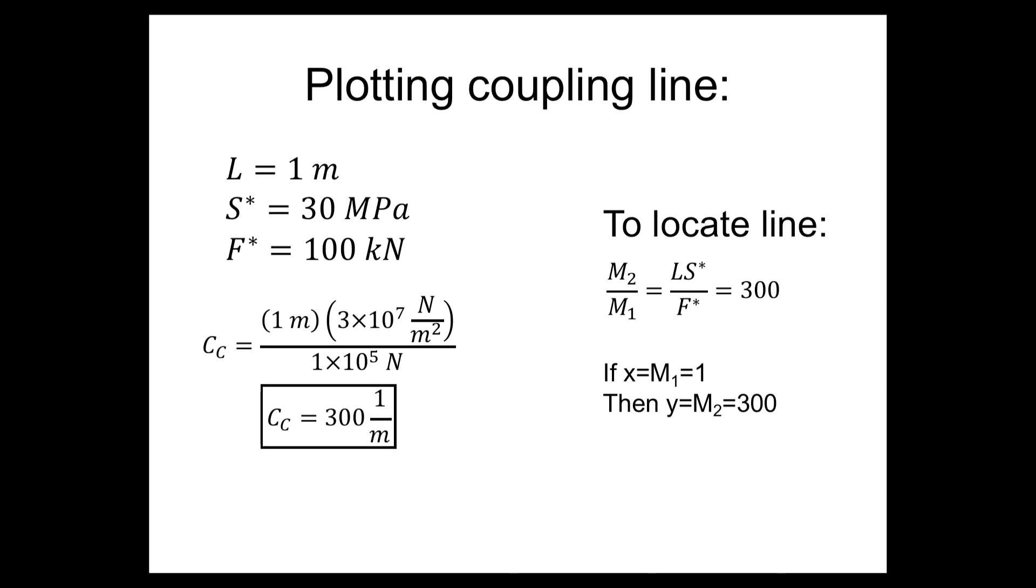we find that we get the coupling constant is equal to the length times the stiffness divided by the force. The specific problem that we're trying to solve is, you can see the coupling constant depends on geometry and functional parameters. So we're going to plot the coupling line for a value of L equals 1 meter, a stiffness of 30 megapascals,